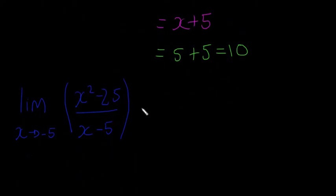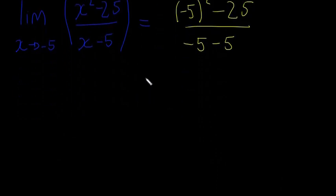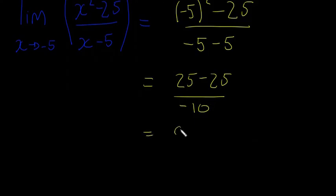We'll see what happens. We're going to go minus 5 squared minus 25 divided by minus 5 minus 5. We just subbed minus 5 into wherever there was an x. Next line, that will give us 25 minus 25 divided by minus 10.